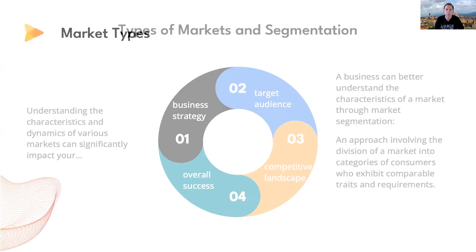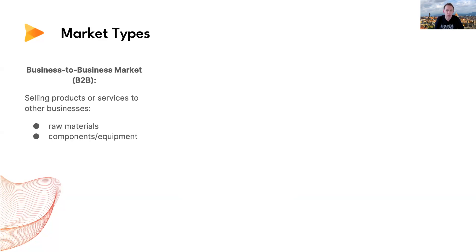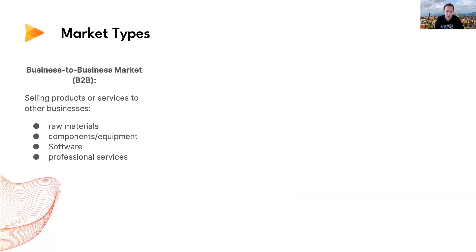The first market type is a business-to-business market, or B2B. This involves selling products or services to other businesses, such as raw materials, components and equipment, software, and professional services. B2B markets often involve longer sales cycles, complex negotiations, and building strong relationships within the target businesses.